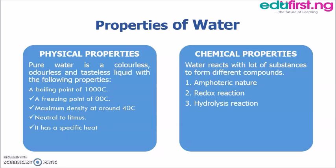Regarding chemical properties: water reacts with a lot of substances to form different compounds. Water is amphoteric in nature, meaning it can act as both an acid and a base. Water also undergoes redox reactions — electropositive elements reduce water to hydrogen molecules, making water a great source of hydrogen. For example, during photosynthesis, water is oxidized into oxygen. Water also has a strong hydrating tendency due to its dielectric constant, dissolving many ionic and covalent compounds, making it excellent for hydrolysis reactions.